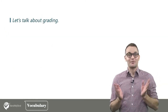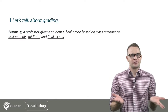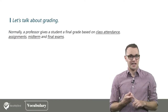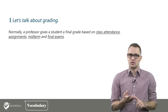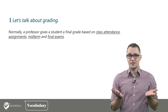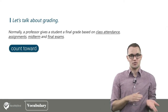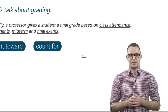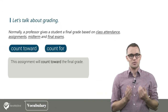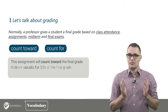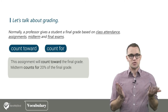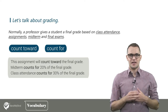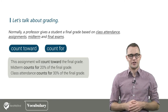Let's talk about grading now. Normally a professor gives a student a final grade based on class attendance, assignments, and midterm and final exams. You often hear the phrases 'count toward' and 'count for.' For example, 'this assignment will count toward the final grade,' 'midterm counts for 20% of the final grade,' and 'class attendance counts for 30% of the final grade.'